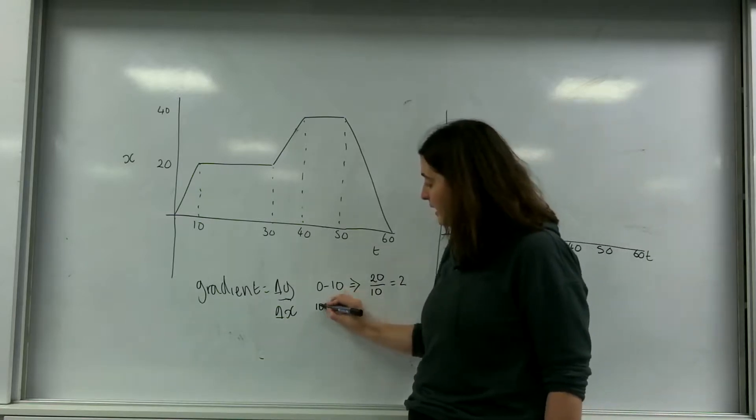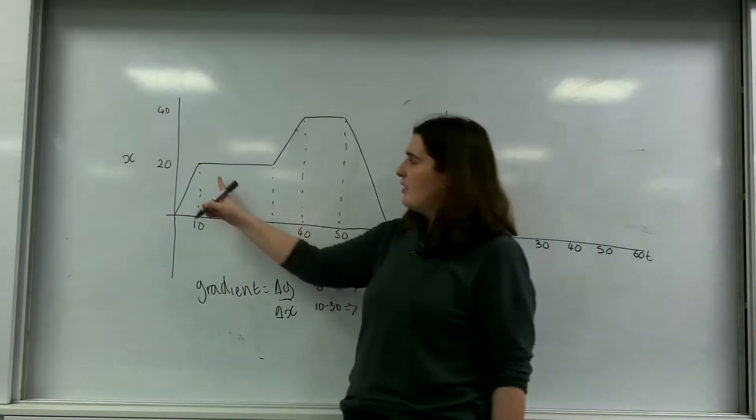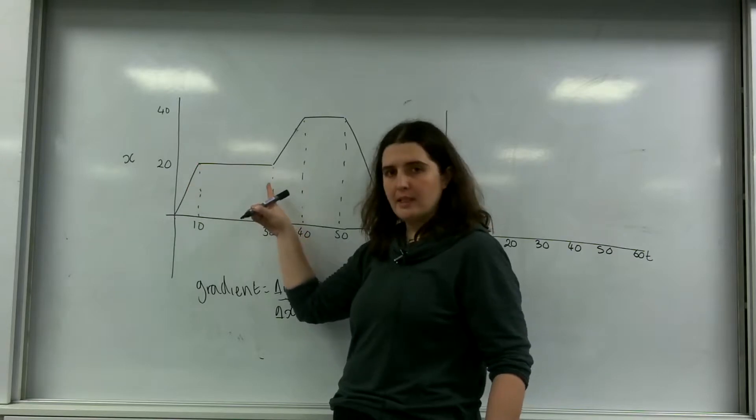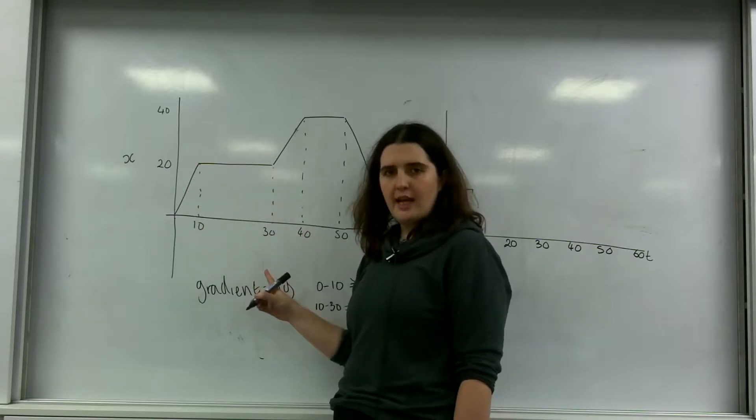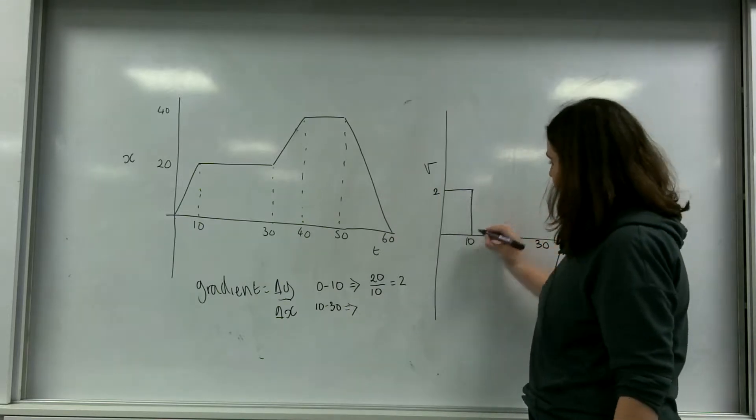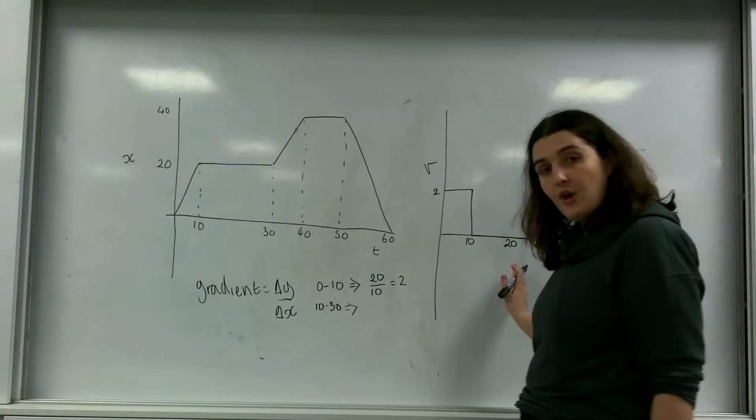Between 10 and 30 seconds, here I have no change in y because I'm staying at 20, but I have a change in x. This means I have 0 gradient. So between 10 and 30 I have no velocity.